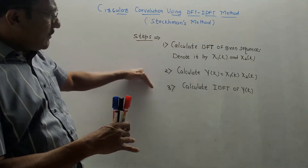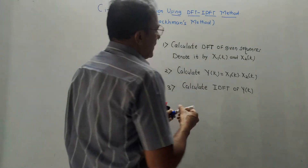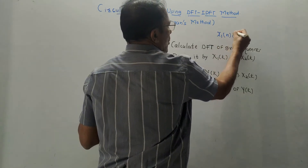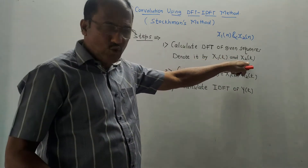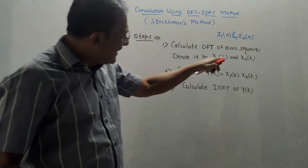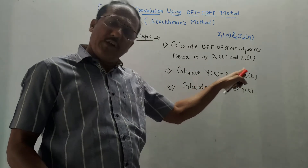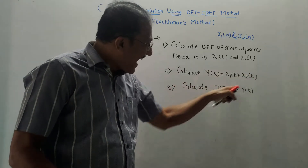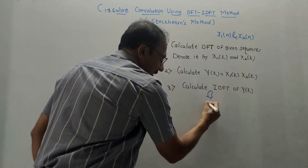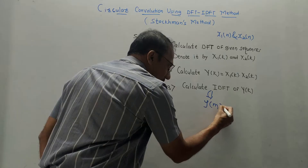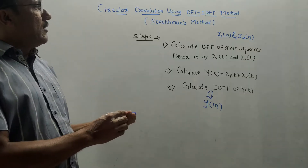What are the steps for solving the numericals? Step 1 is to calculate the DFT of the given sequences, X1(N) and X2(N), giving X1(K) and X2(K). Step 2 is to take the multiplication of these two answers: Y(K) = X1(K) × X2(K). Step 3 is to calculate the IDFT — inverse DFT — of Y(K), which in circular convolution is denoted by Y(M).